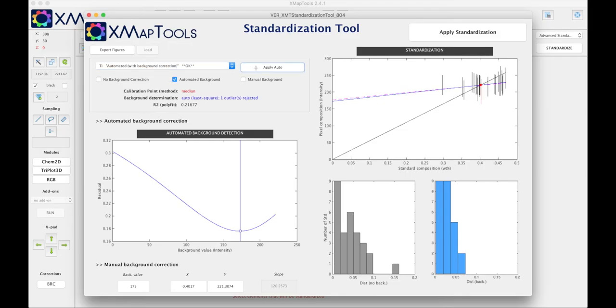And titanium, we can define a background correction and press auto. This example is really nice because we can see what would be the difference between the old method, the black calibration curve, and the new method, the blue calibration curve.